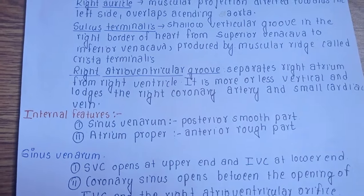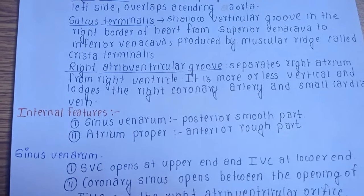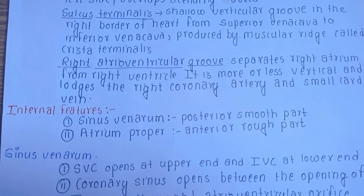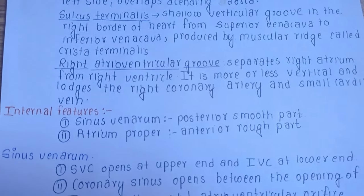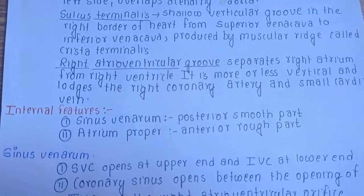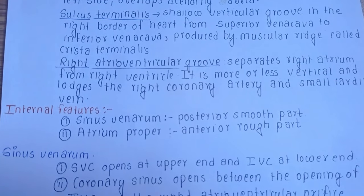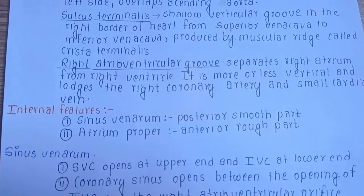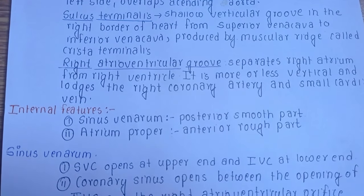Now let's go into the internal features. In the internal features we have a posterior smooth part, which is the sinus venarum, and an anterior rough part, which is the atrium proper.